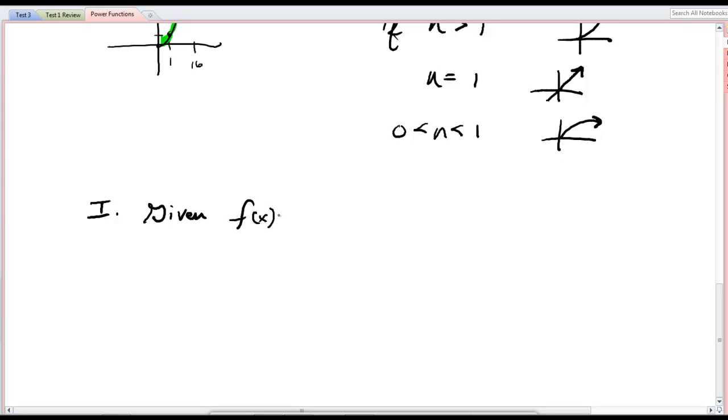Given f(x) equals x to the 6, you could be asked to find f(2), which is something I would expect anybody who understands function notation would be able to figure out. That is 64.